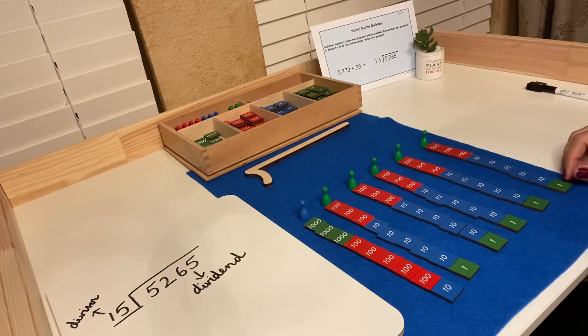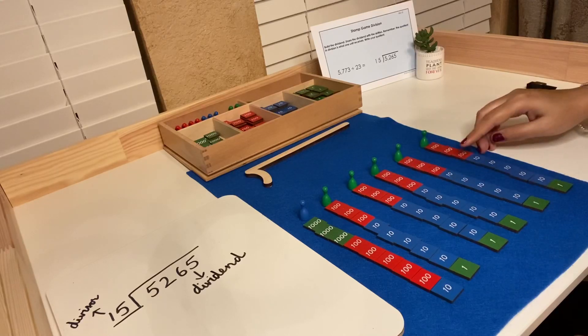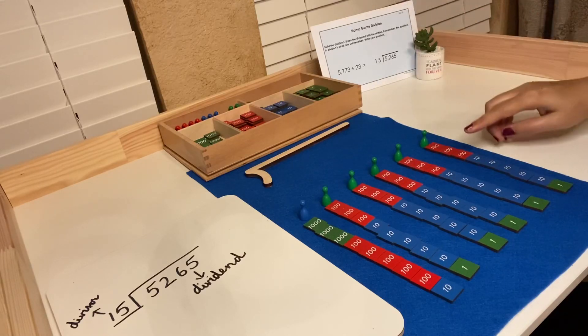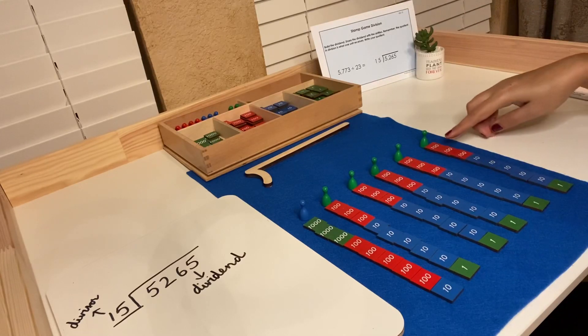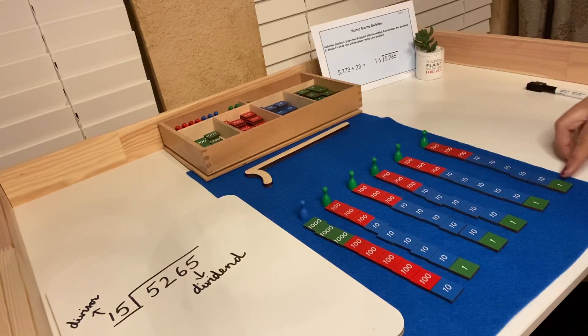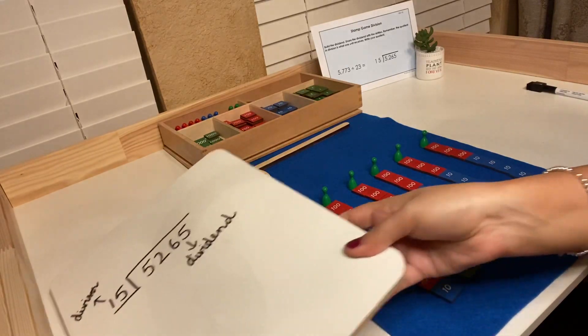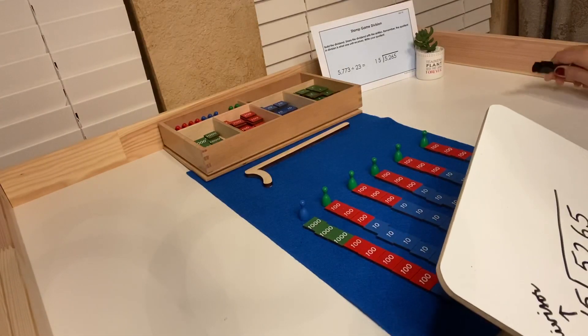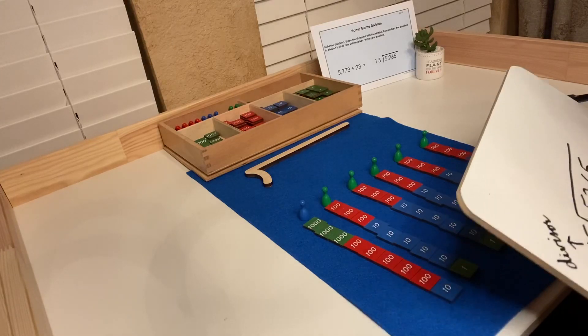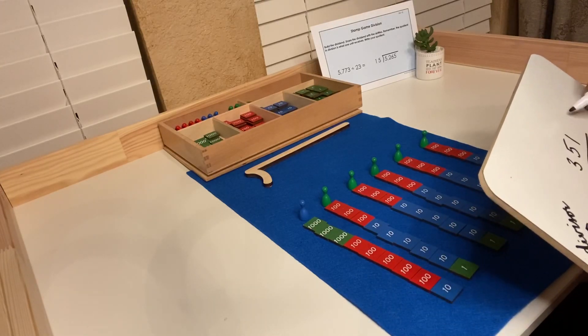Our quotient is what one unit receives. So here, one unit receives 351. In this problem, we do not have a remainder, so our quotient is 351.